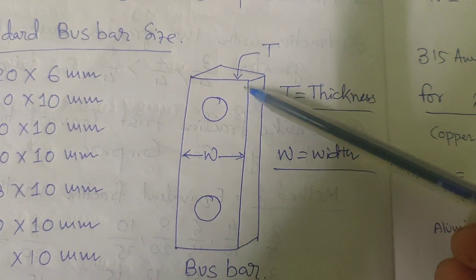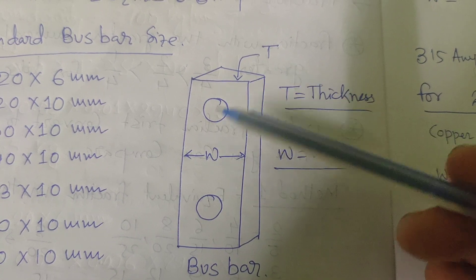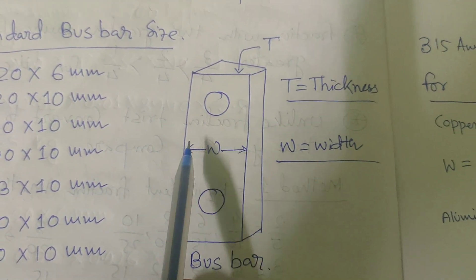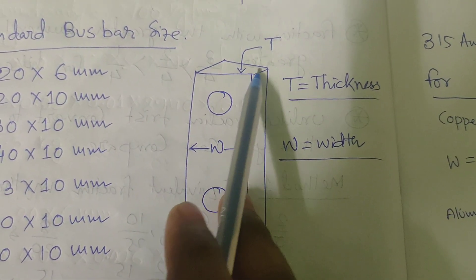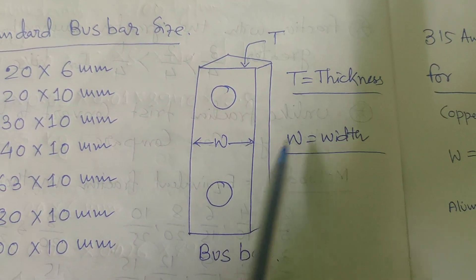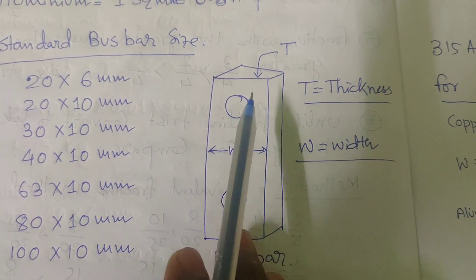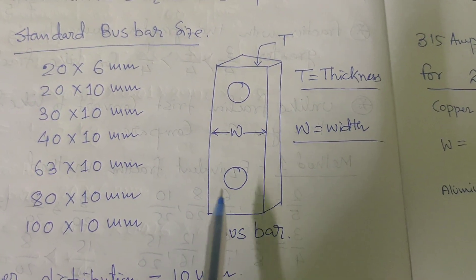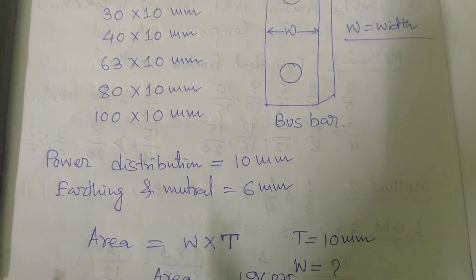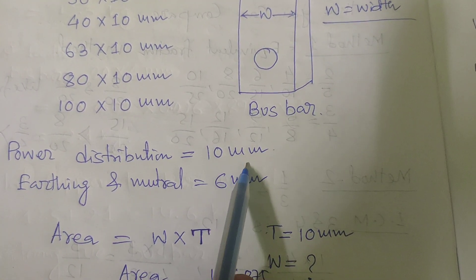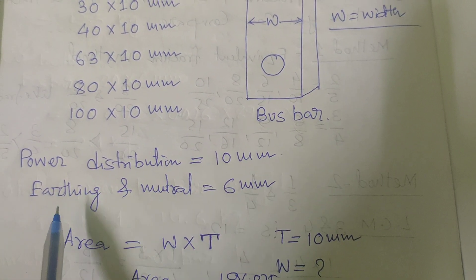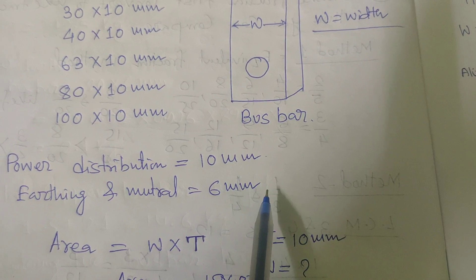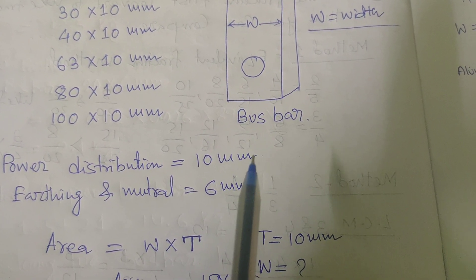Now we draw a picture of a busbar. This is the width of the busbar and this is the thickness of the busbar — T is the thickness and W is the width. These are the holes for connections with other parts of the busbars. For power distribution we use 10 mm thickness busbars, and for earthing and neutral connections we use 6 mm, 4 mm, or 2 mm as per the situation and requirement.